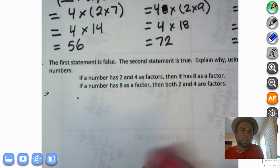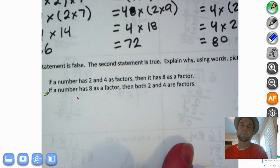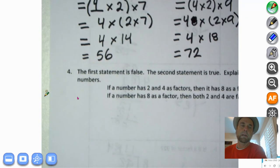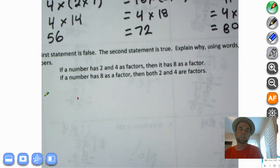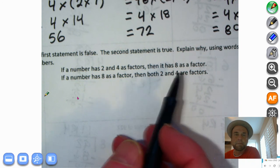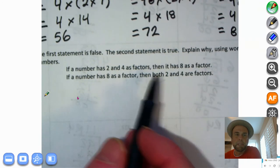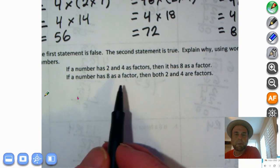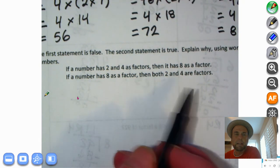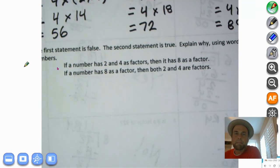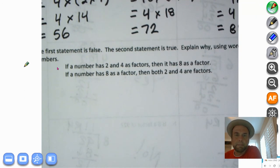All right. We'll continue on number 3. The first statement is false. The second statement is true. Explain why using words, pictures, or numbers. If a number has 2 and 4 as factors, then it has an 8 as a factor. The first statement is false. If a number has 8 as a factor, then both 2 and 4 are factors.